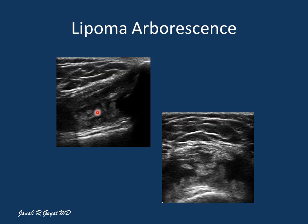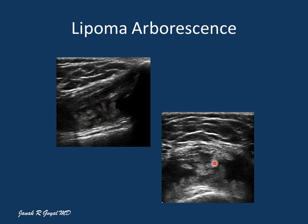Lipoma arborescens is a rare condition which affects the synovium with villous lipomatous deposits, especially in the suprapatellar pouch of the knee. Here is the suprapatellar pouch with the villous deposits in the synovium on the long axis scan and here is the short axis scan.